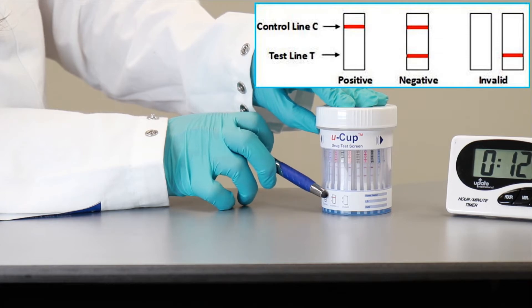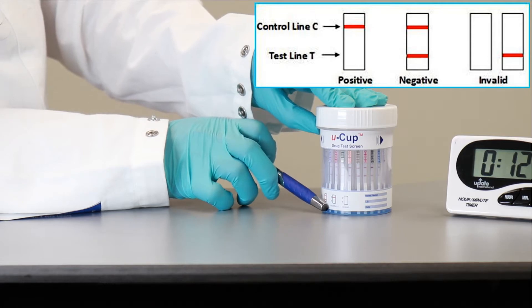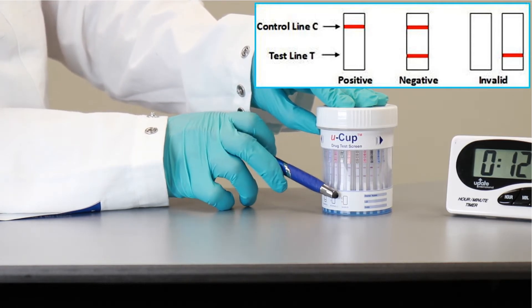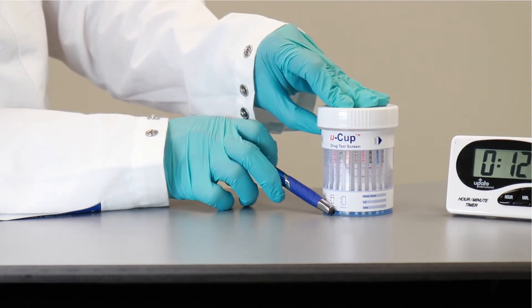If there is only one line, which is a control line, and no test line, the result is positive. If you do not see any line, there is a blank window, that is an invalid result.